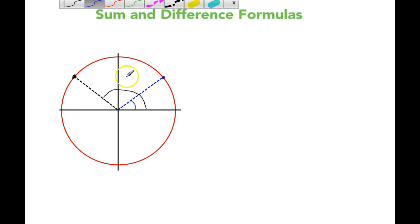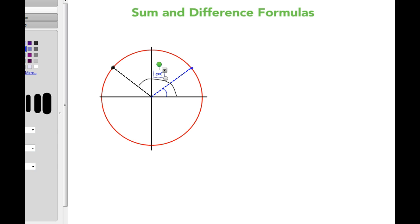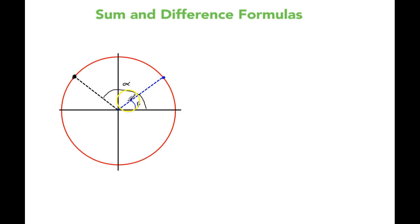Hello and welcome to a video on the sum and difference formulas. I've got here two angles in the unit circle. The black angle is alpha and the smaller acute angle is beta. Alpha goes all the way into the second quadrant so it's obtuse. Beta is here in the first quadrant so it's acute, but it doesn't have to be that way — it could be acute or obtuse.